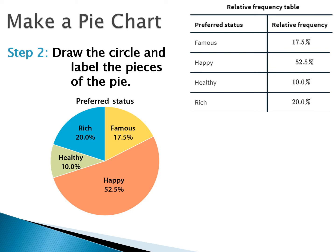We can see that 'happy' is about just over a straight line because it's just over 180 degrees, and 'famous' is about two-thirds of a right angle.